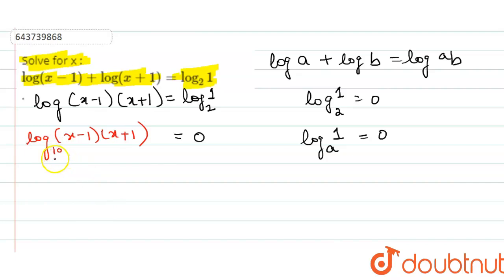the base of the log will go to right hand side and will become the base of the exponent, and the term already at the right hand side will go to the power of the base. So we will be left with equation (x - 1)(x + 1) = 10⁰.